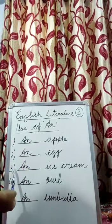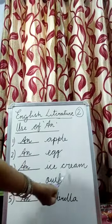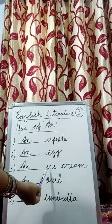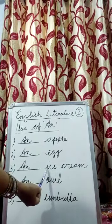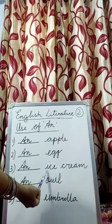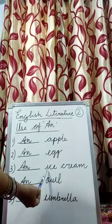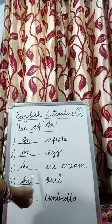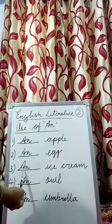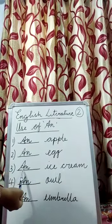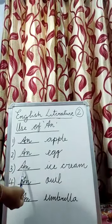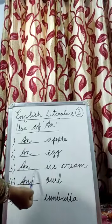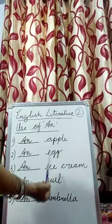Third one — ice cream. Ice cream starts with what letter, children? I. And I is what? A vowel. Correct. So what you will do here? You will use AN. And ice cream.